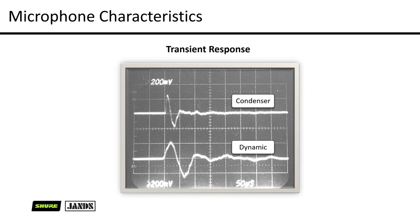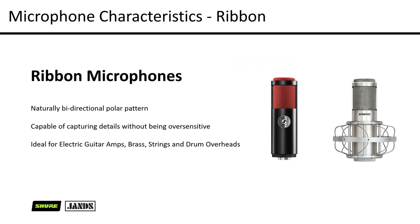Another type are ribbon microphones. These are a little more delicate and require more sensitive handling. Modern ribbon microphones are more rugged than historic ones, but it is worthwhile to treat them with care. Ribbon microphones are naturally bidirectional — they capture sounds from the front and the back. They can capture a few more nuances and tend to have a warmer tone. They're generally used for things like electric guitar amps, strings, and overheads for drums, and can capture a much wider frequency range than standard dynamic microphones.